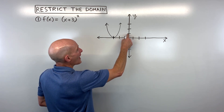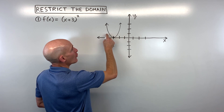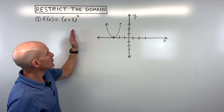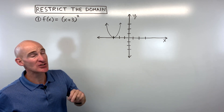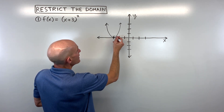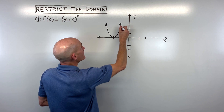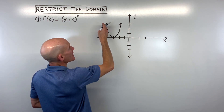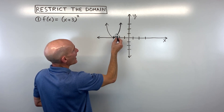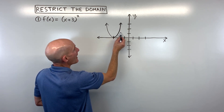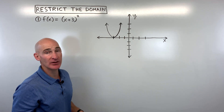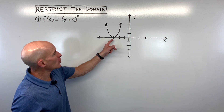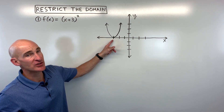For every y value, you can see there's more than one x value. So what we're going to do is restrict the domain. We have two options: we can look at just the right branch of the graph, or the left branch. If we look at just one half of this parabola, it would pass the horizontal line test — meaning the horizontal line would only cross the graph at most once. So let's do this problem two different ways so you can see both.